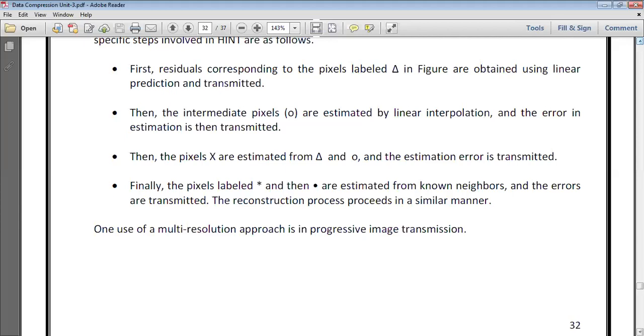After labeling with triangles in the second step, the intermediate pixels represented by circles are estimated also by linear interpolation, and the error in the estimation is then transmitted. Third, then the pixels X are transmitted from triangles and circles, and again the estimation error is transmitted.